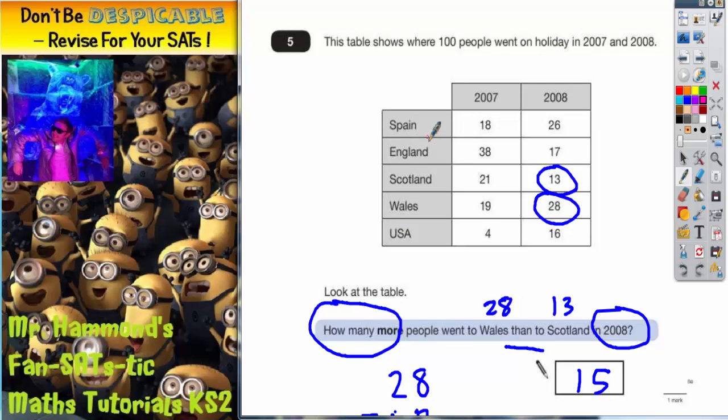Now Spain, did that increase? Yes it did. It went from 18 to 26. So that's going up and that's going to go up 8. 18 plus 8 is 26. Did England increase? Well 38 to 17 is actually going down so that's a decrease. So we can rule out England straight away because we're looking for an increase.